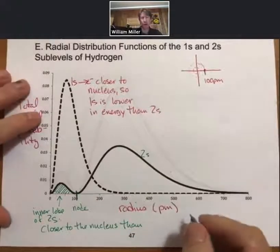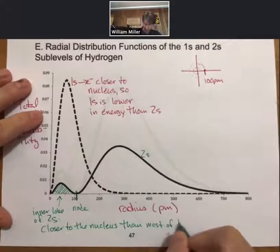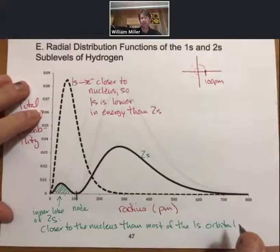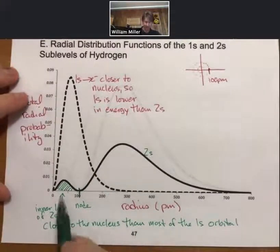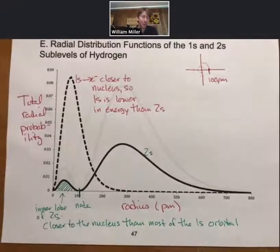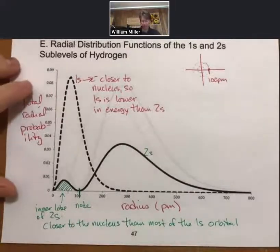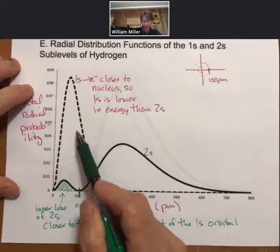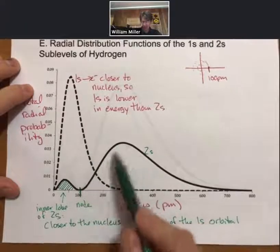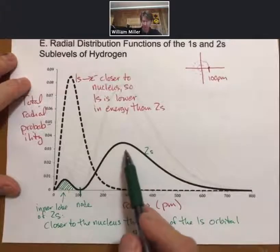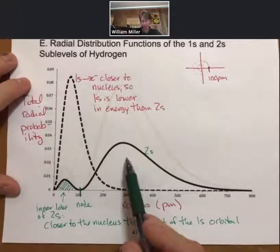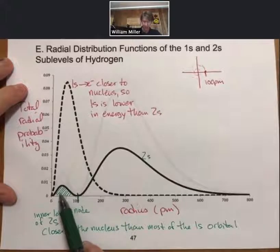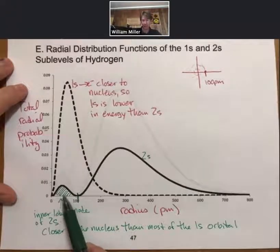And what that's going to mean is if you're closer to the nucleus, that means that you're more attracted to the nucleus. And another way of looking at it is since these electrons, the 1s electrons, are between most of the 2s, the rest of it anyway, so these are going to be less attracted to the nucleus and also repelled by the 1s electrons. This area right here is pretty strongly attracted to the nucleus in the inner lobe.